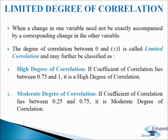Next, we come to moderate degree of correlation. If the coefficient of correlation lies between 0.25 and 0.75, it will be a moderate degree of correlation.